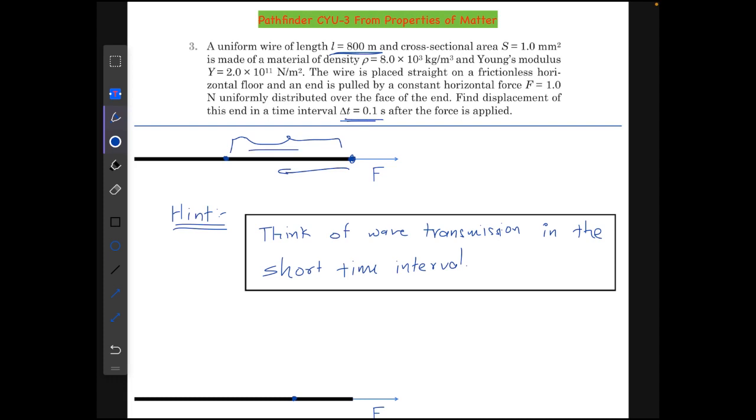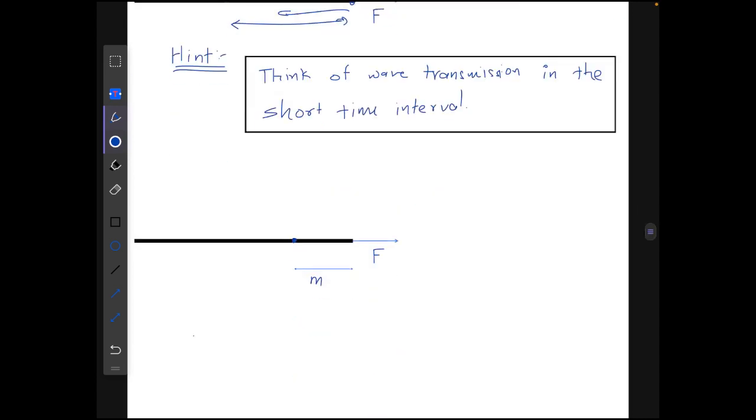So the displacement of this point comes due to the extension of this part only. So from here, let's first find this distance till which the wave has traveled in this short time interval. So the speed of the wave, the longitudinal wave in this case, it will be √(Y/ρ).